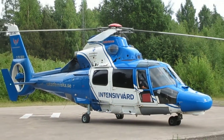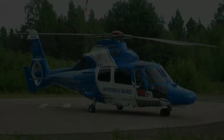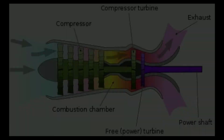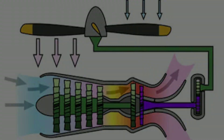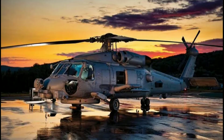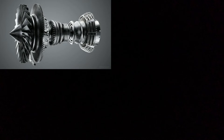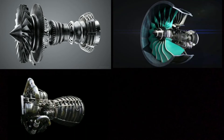The fourth type is used in helicopters and is called the turboshaft engine. In turboshaft engines, an additional free turbine is placed to which a shaft is connected. The exhaust heat energy is converted into shaft power. Turboshaft engines are mostly used in helicopters and auxiliary power units.